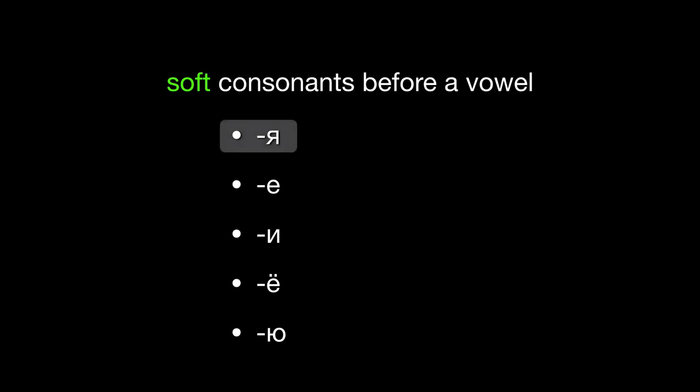The names of the letters are Я, Е, И, Ё, and Ю. When you see them used directly after a consonant, they don't just signify a vowel sound. They also show that the preceding consonant is soft.